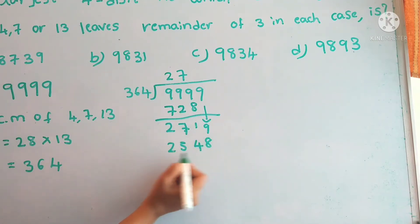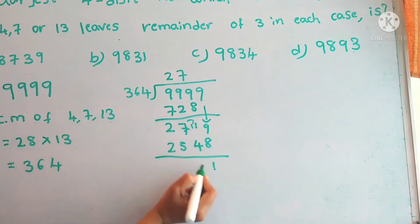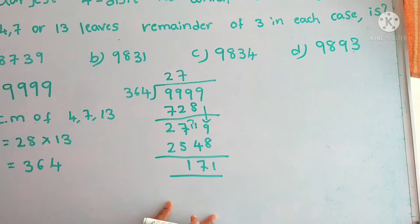So here we will get the remainder: 9 minus 8 is 1, and 11 minus 4 is 7, and 6 minus 5 is 1. So 171, here we got the remainder 171.